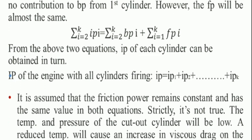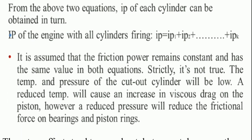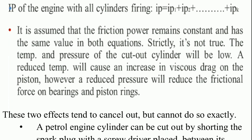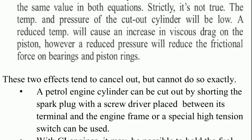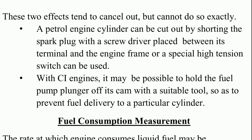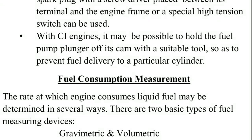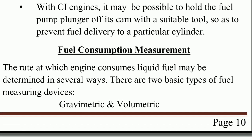It is assumed that friction power remains constant and has the same value in both equations — strictly this is not true. The temperature and pressure of the cut-out cylinder will be lower: a reduced temperature will cause an increase in viscous drag on the piston, however a reduced pressure will reduce the frictional force on bearings and piston rings. These two effects tend to cancel out but cannot do so exactly. A petrol engine cylinder can be cut out by shorting the spark plug with a screwdriver, or a special high-tension switch can be used. With CI engines, it may be possible to hold the fuel pump follower off its cam to prevent fuel delivery to a particular cylinder.